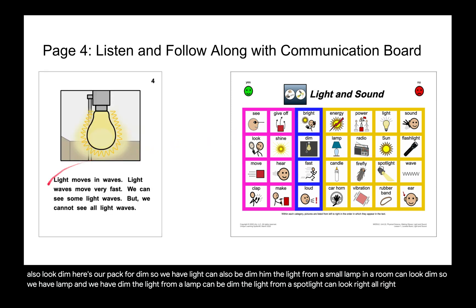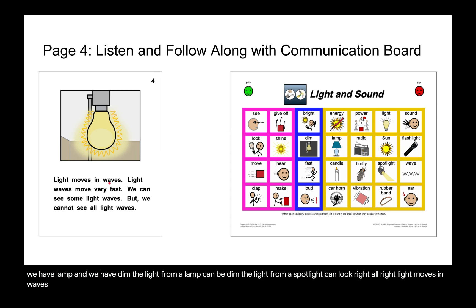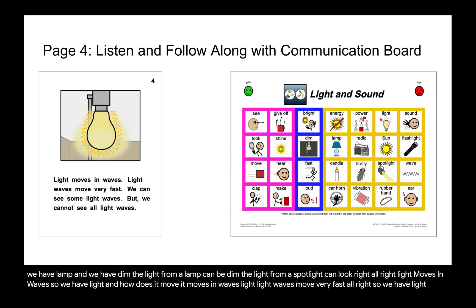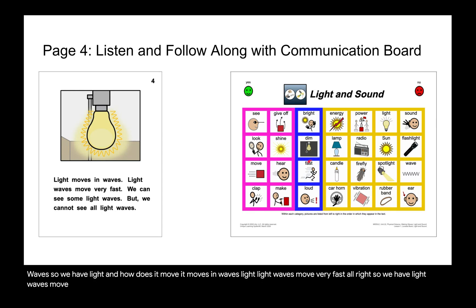Light moves in waves — so we have light, and how does it move? It moves in waves. Light waves move very fast. We can see some light waves, but we cannot see all light waves.